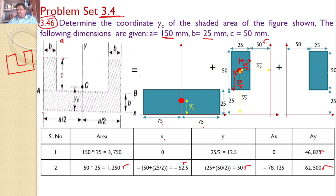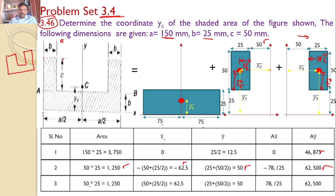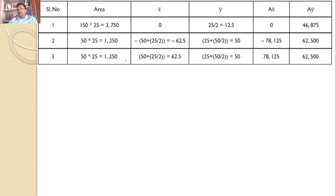For the third area, which is in the first quadrant, the centroid distance x3-bar and y3-bar are found similarly. The distance is 25 by 2, the known distance is 50, and 50 by 2. So x3-bar equals 50 plus 25 by 2, which is positive since it is on the right side. Area 3 equals 50 times 25, giving 1250. x3-bar equals 62.5 and y3-bar equals 50. The table values follow accordingly.